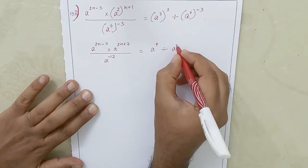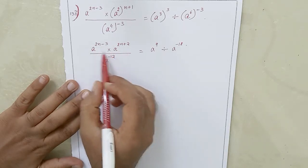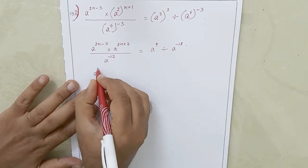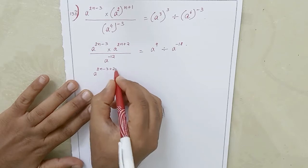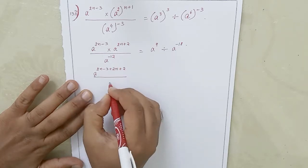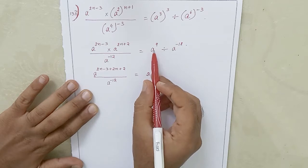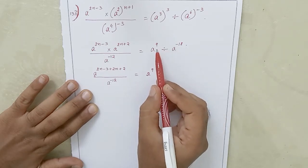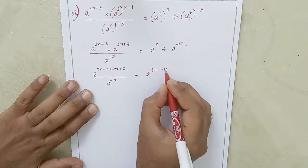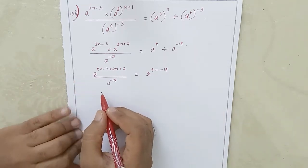Now what I will do is add these powers and then subtract this power. The base is the same — the base is a — so I can add these exponents: a power 2n minus 3 plus 2n plus 2, then divided by a power minus 12, equals a power 9 divided by a power something. Because it's division, I can subtract these exponents: a power 9 minus minus 18.